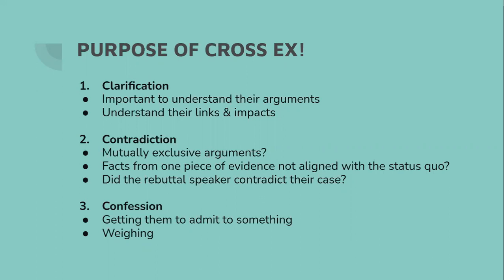The second thing you do in cross-examination is point out contradictions. Contradicting is basically where someone says one thing but then later says the complete opposite. If your opponent does that, make sure to point it out in cross-ex, or you can save it for rebuttal — it's your choice. For example, let's say your opponent says that a new law is going to cause starvation.